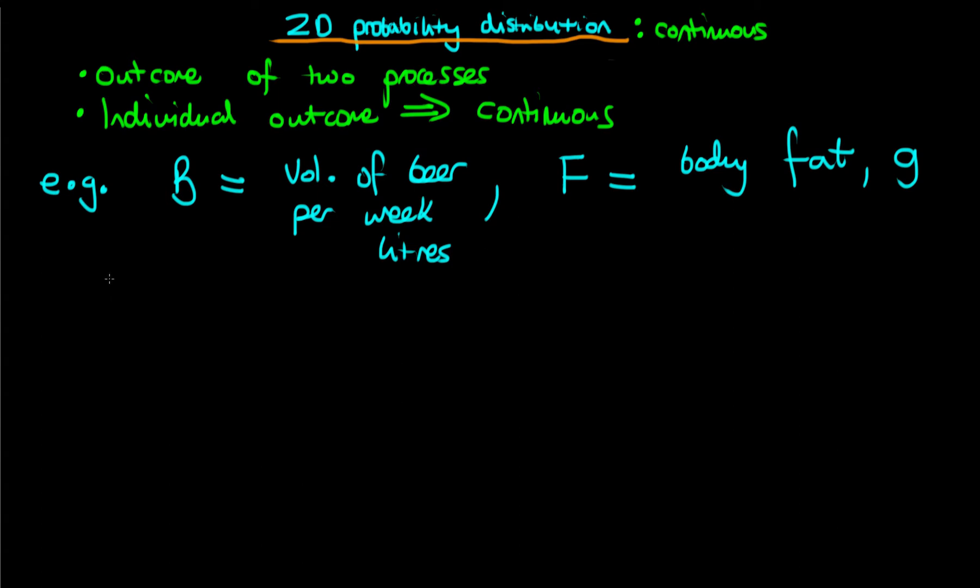So what might a probability distribution function look like in this case? Well, we've got two potential outcomes, and so we've got on our axis here B, our random variable which represents the volume of beer drunk per week, and F, which represents an individual's level of body fat. Now, the third axis, as for the univariate case, represents a probability density.